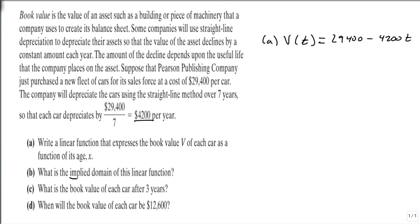It's asking for an implied domain. For part b, the domain starts at zero years, that's the fewest years we're going to keep the car, and we're only going to keep it for seven years, so we stop at seven. The implied domain, because of this over seven year statement, is zero to seven.